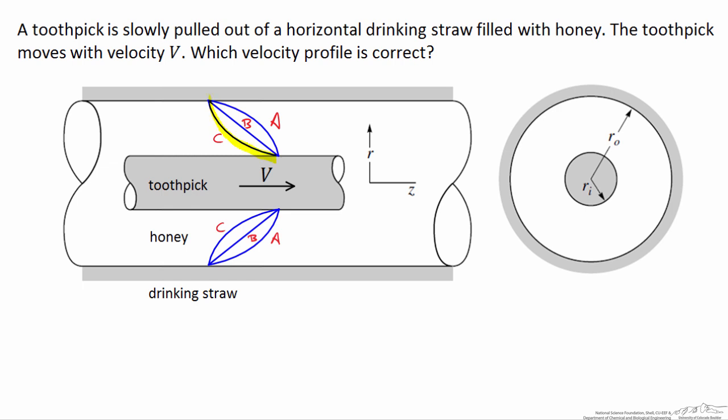You've selected velocity profile C, in which the profile looks like this with that sort of concavity. It turns out that you're right — the velocity profile does look like that, and we need a couple of things to justify that.